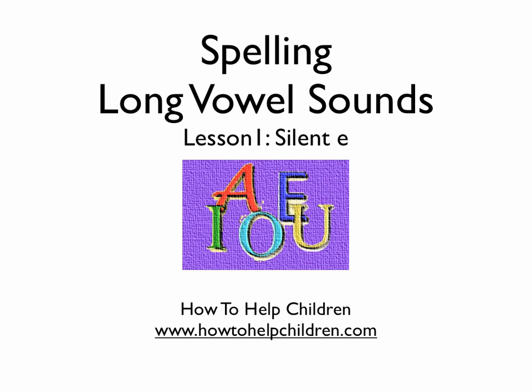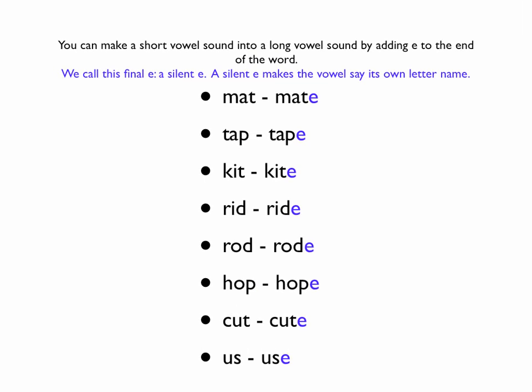We're going to look at the long vowel sounds, and first up in lesson one we're going to look at the silent E. You can make a short vowel sound into a long vowel sound simply by adding an E to the end of the word. We call this final E a silent E. The silent E makes the vowel say its own letter name. Sometimes people call it a policeman E because it's very bossy — it's quiet but it's bossy because it tells a letter to say its own name.